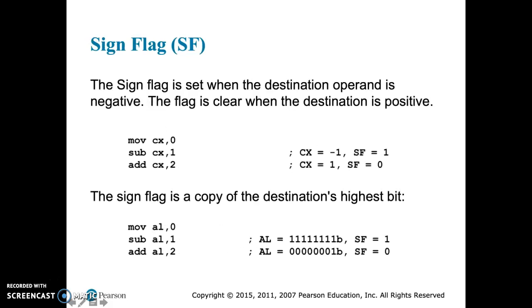Similar flag is the sign flag. If the destination is negative, the sign flag gets set. So that's just how the computer knows the sign of a number. If the flag is clear, the destination is positive.